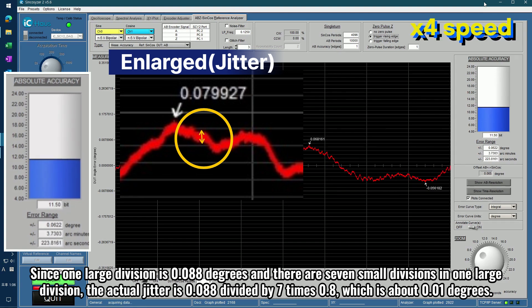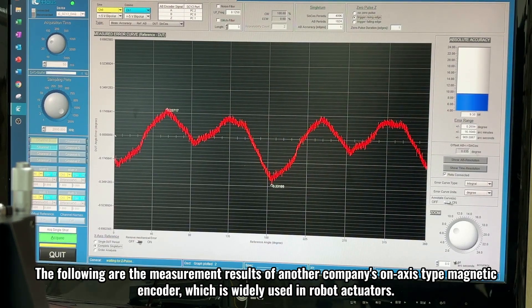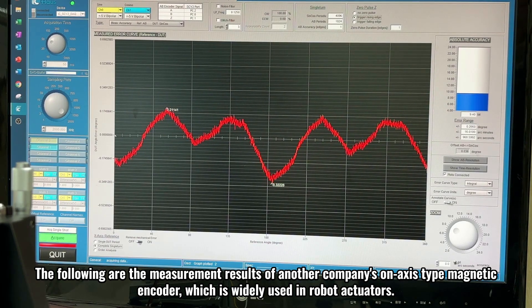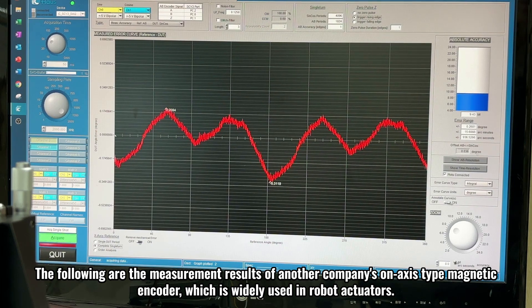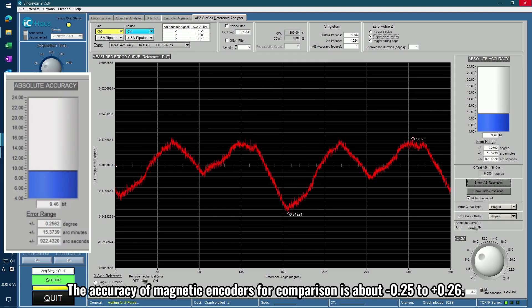The following are the measurement results of another company's on-axis type magnetic encoder, which is widely used in robot actuators. What you need to pay attention to is that the ICTW39's y-axis is minus 0.35 to plus 0.35, while the y-axis of the magnetic encoder for comparison is twice that of minus 0.69 to plus 0.69. The accuracy of magnetic encoders for comparison is about minus 0.25 to plus 0.26.